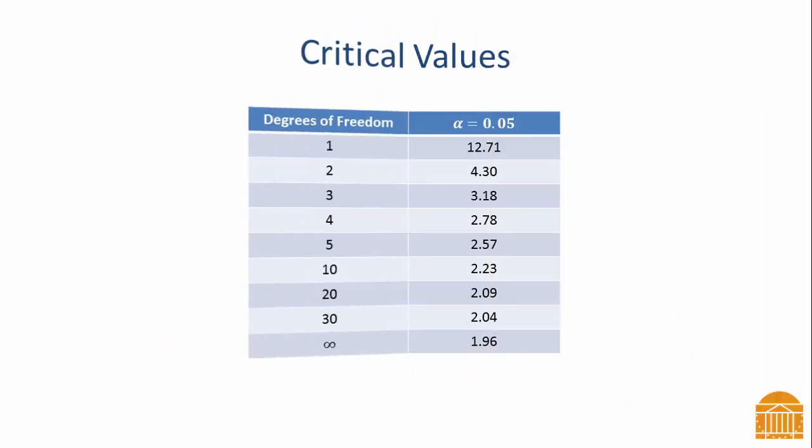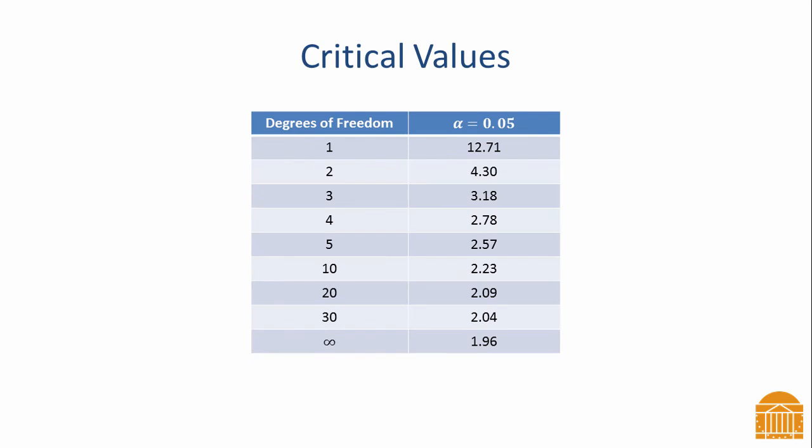We can look at critical values to see how the rejection region for a t-distribution becomes more similar to that for a standard normal distribution. The left column of this table shows the degrees of freedom and the right column shows the critical value for a two-sided t-test with a significance level of 0.05. Recall that the same critical value for a standard normal distribution is 1.96.